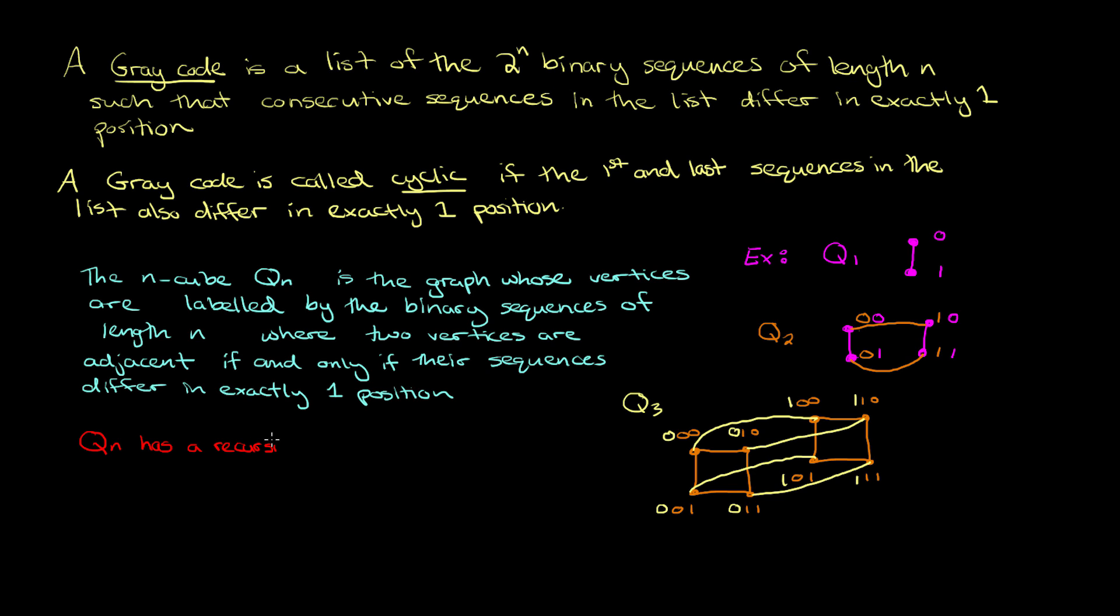So we've observed that qn has a recursive structure. It can be thought of having one part called a and another part called b where a is isomorphic to qn minus one and b is also isomorphic to qn minus one and then we join up corresponding vertices of a and b. So that's a nice easy way to recursively build up the n cube qn.